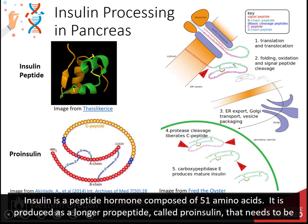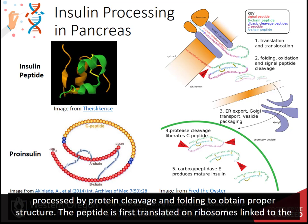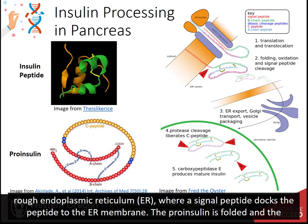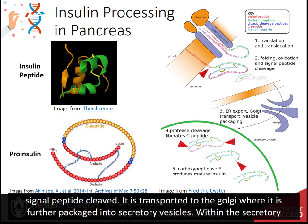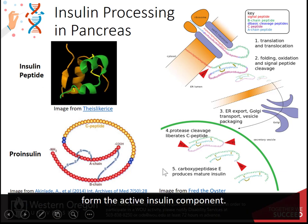Insulin is a peptide hormone composed of 51 amino acids. It is produced as a longer propeptide called proinsulin that needs to be processed by protein cleavage and folding to obtain proper structure. The peptide is first translated on ribosomes linked to the rough endoplasmic reticulum, where a signal peptide docks the peptide to the ER membrane. The proinsulin is folded and the signal peptide cleaved. It is transported to the Golgi where it is further packaged into secretory vesicles. Within the secretory vesicles, the proinsulin is cleaved to release the C peptide. The A and B peptides are held together by disulfide bridges and form the active insulin component.